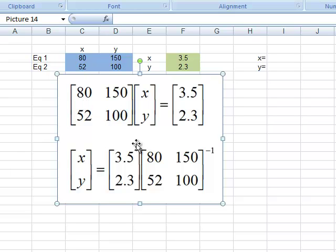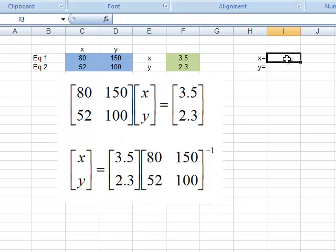So what we want to do is get Excel to do this calculation. So I want to solve for x and y. This is where I'm going to have my solution. So I highlight both cells and type in the formula equals to MMULT. This is the Excel formula for multiplying two matrices.